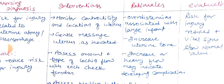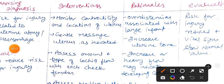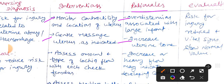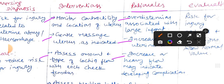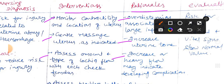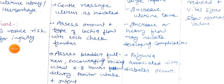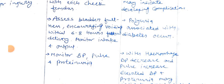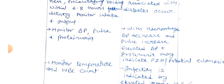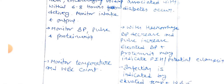Interventions and rationale for diagnosis two: First, monitor contractility and location of uterus — rationale: overdistension is associated with large infant. Next, gentle massage of uterus as indicated — rationale: increases uterine tone. Assess amount and type of lochia flow with each fundal check — rationale: increased or heavy flow may indicate developing complications. Continue to assess bladder fullness, encouraging voiding within six to eight hours following delivery; monitor intake and output — rationale: polyuria is associated with diabetes mellitus.